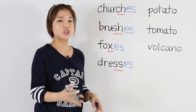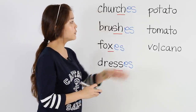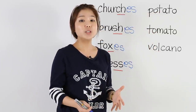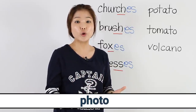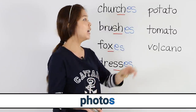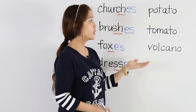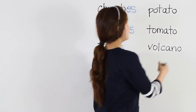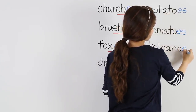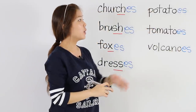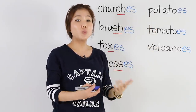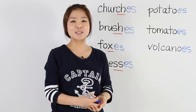Most other nouns, we just add S. But we have some special nouns: potato, tomato, volcano. Most nouns that end in O, like 'photo', we just add S — photos. But these are special because we actually have to put ES at the end: potatoes, tomatoes, volcanoes. For most nouns that end in O, we just add S.